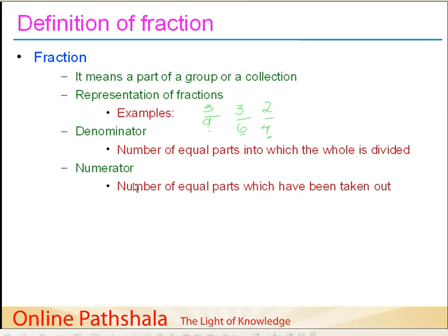And then we have a numerator. The numerator is the number at the top. In our cases, the numerators are 3, 3, and 2, and it represents the number of equal parts which have been taken out. In our earlier examples, we shaded 3 parts, then another 3 parts, and similarly 2 parts in the third example.